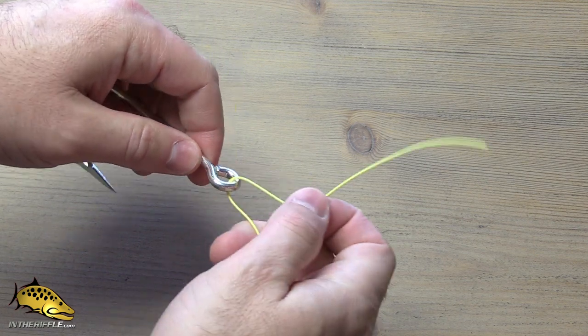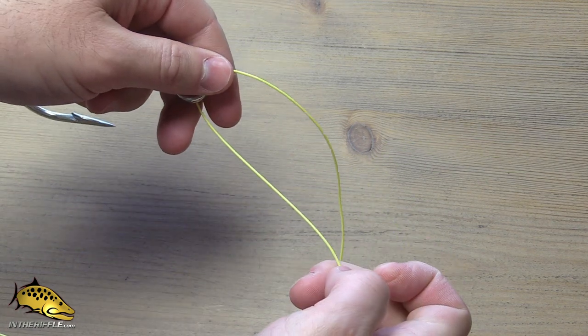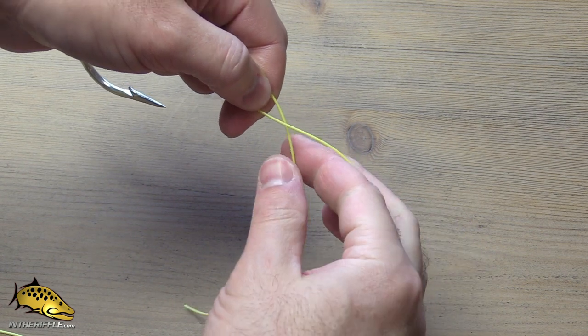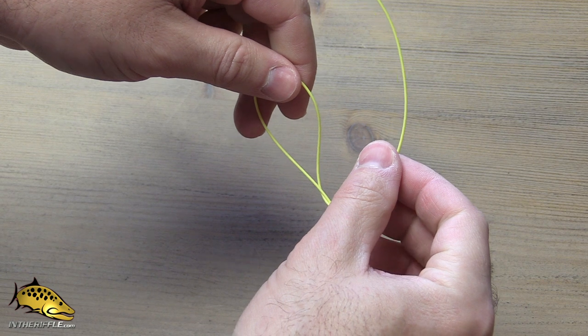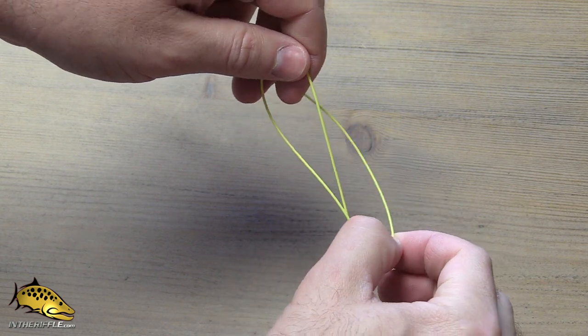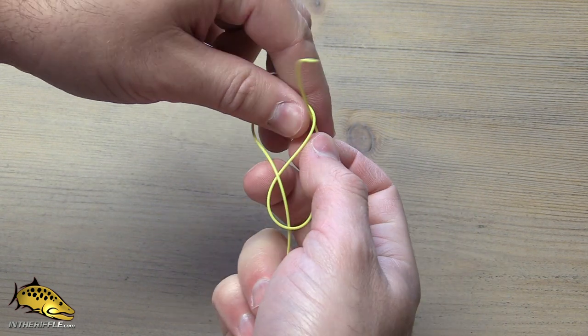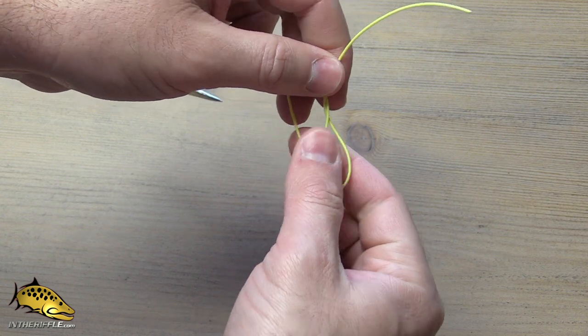First, go up through the eye of the hook. Drop your tag end behind the standing line and cross it up and over. You're going to put it through this loop, but come in behind the loop. You'll end up with a little bit of a figure eight.